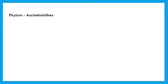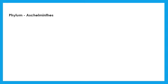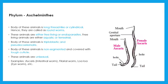Let us learn about phylum Aschelminthes. These are multicellular, triploblastic, pseudocoelomate animals having bilateral symmetry. The body is long and thread-like or cylindrical, hence they are called roundworms. They are either free-living or endoparasites, and they are unisexual — that is, male and female sexes are separate. Examples include Ascaris, the worm found in the intestine, and the filarial worm, which causes filariasis.